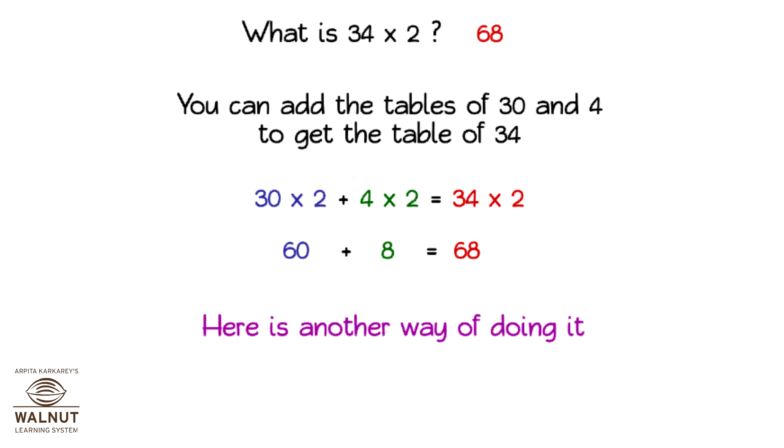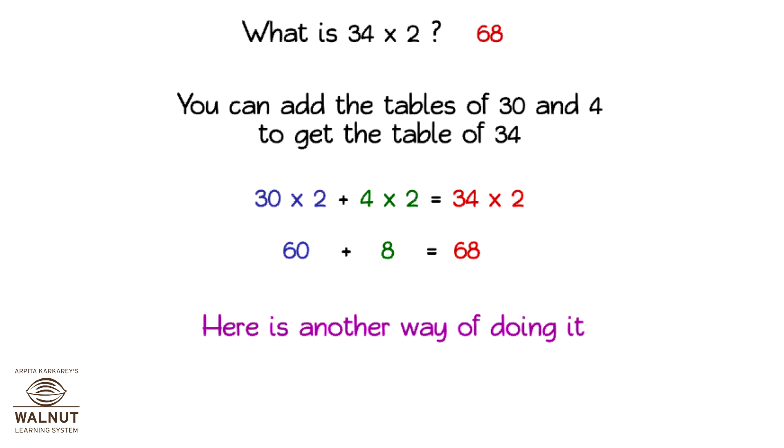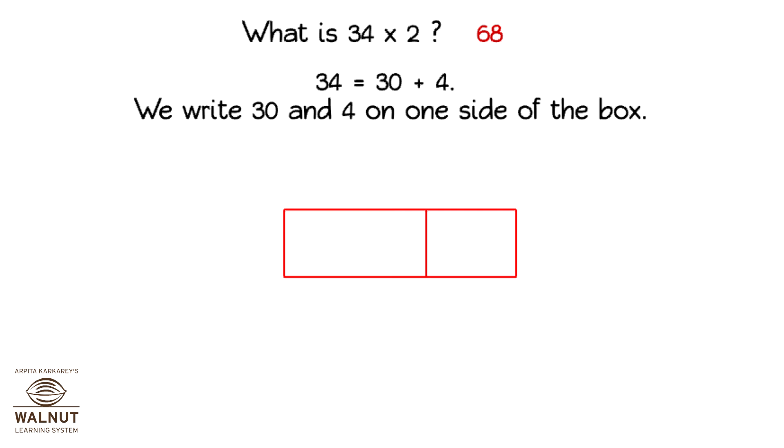Here is another way of doing it. What is 34 into 2? 68. Draw boxes like this. 34 is equal to 30 plus 4. We write 30 and 4 on one side of the box.